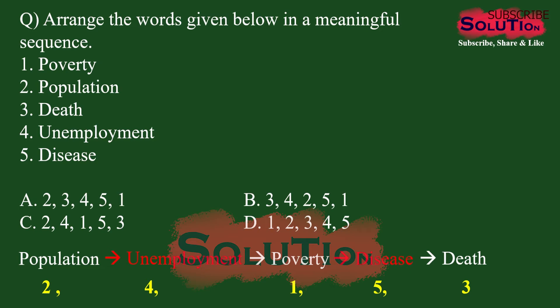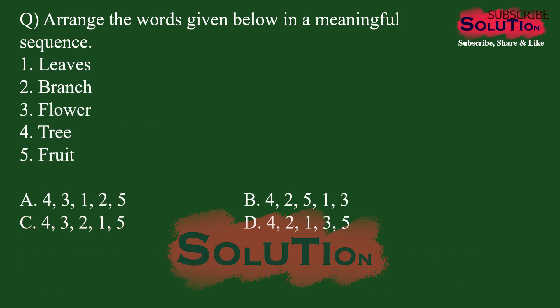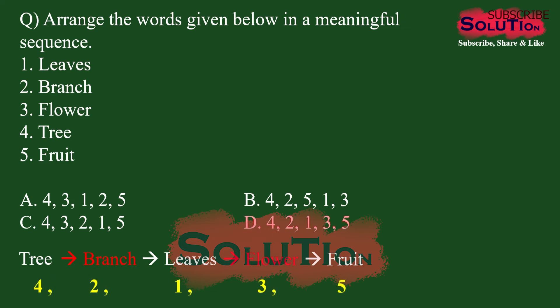For the next sequence, tree must come first, then branch, then leaves, then flowers, and finally fruit since some trees give us fruit. So the sequence is 4, 2, 1, 3, 5 and the answer is option D.